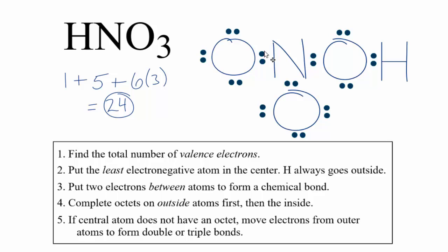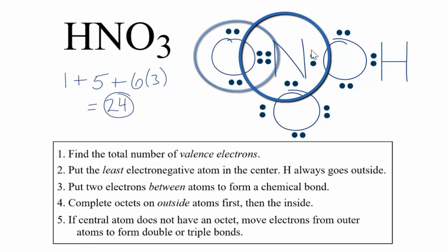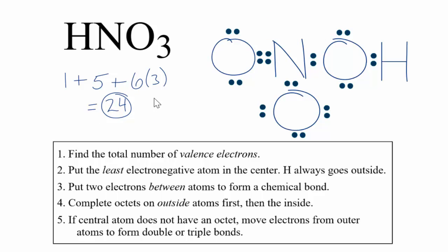Let's move two electrons to the center to form a double bond. Now this oxygen has eight and nitrogen has eight, and we're still only using 24 valence electrons. So this is a valid Lewis structure for HNO3, nitric acid.